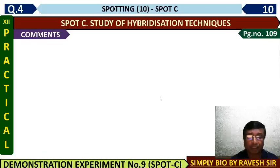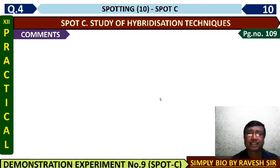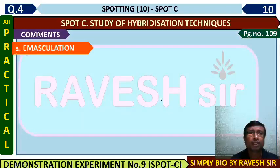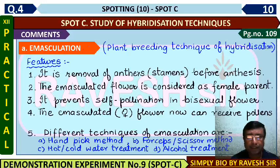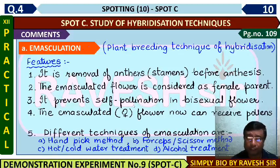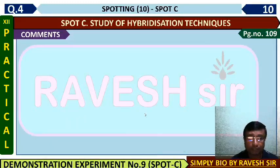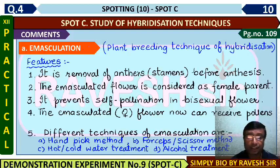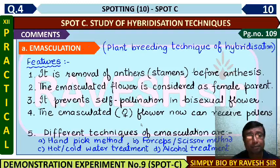For the exam, you will write about three techniques: emasculation, bagging, and tagging. For emasculation, the simple points are: emasculation is a plant breeding technique of hybridization; it is the removal of the male part — anther or stamen — from a bisexual flower before anthesis; the emasculated flower is considered a female parent; it prevents self-pollination in bisexual flowers; the emasculated flower can now receive pollen from the desired male flower. Different techniques of emasculation include the handpick method, forceps and scissor method, hot and cold water treatment, and alcohol treatment.